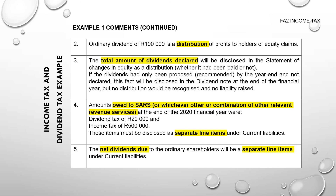From the company's perspective, R100,000 worth of dividends have been declared, so in the statement of changes in equity that is shown as a distribution of retained earnings. Regarding the liabilities towards the revenue service — income tax of R500,000 and dividends tax of R20,000 — one of the requirements of IAS 1 is that liabilities towards the revenue service must be disclosed separately. You cannot simply net off amounts owed to the revenue service against amounts they owe you; those are individual amounts owing and must be disclosed individually.